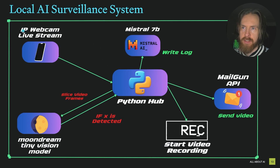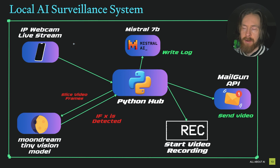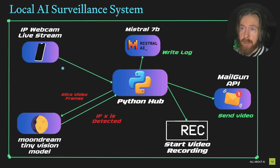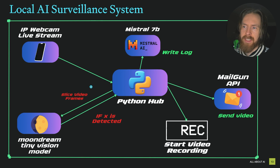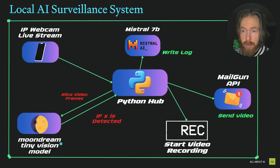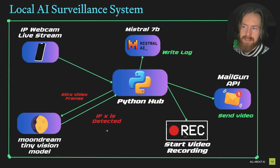To explain this system a bit better, I created this flowchart. The first thing we need is an IP webcam live stream - this is very easy to set up, it's just an app you download on your Android phone. It might even work on iPhone, I'm not quite sure. We just start the server and then we are live streaming. This can be connected with OpenCV to our Python hub and we can slice some video frames from that live stream.